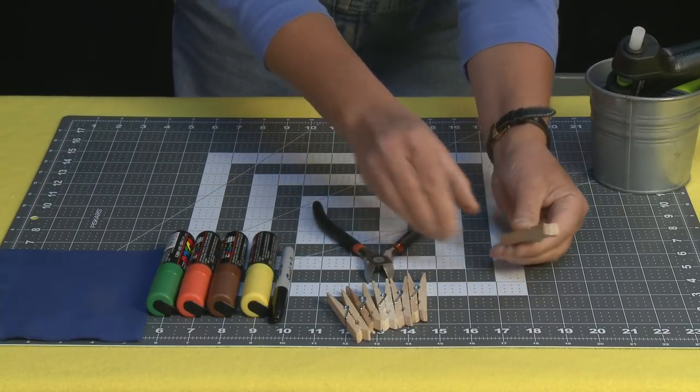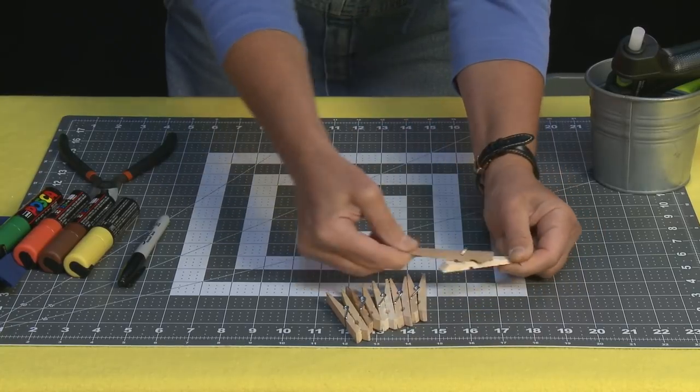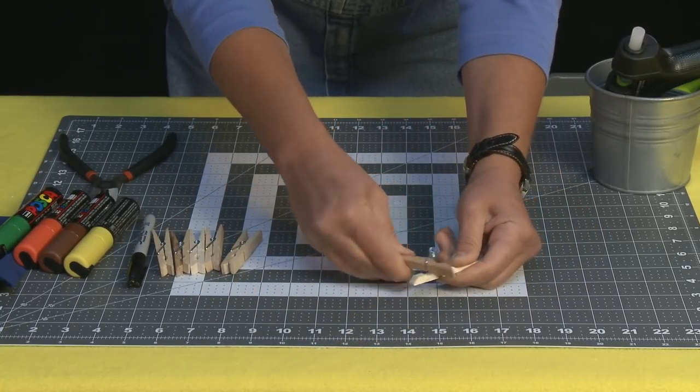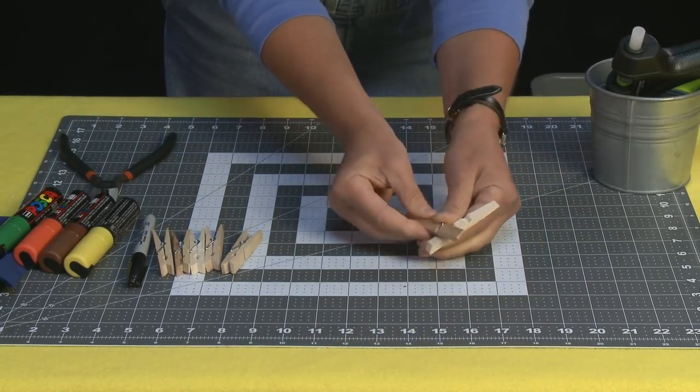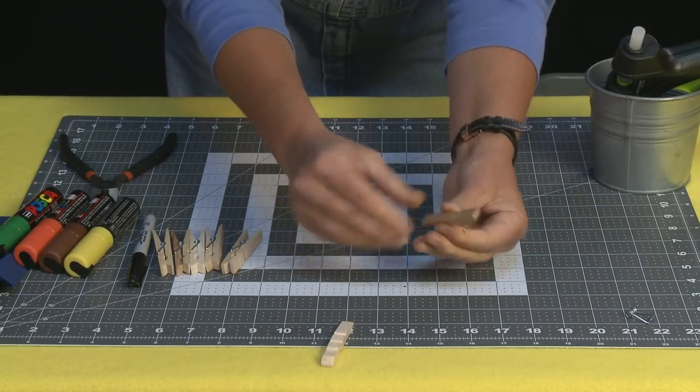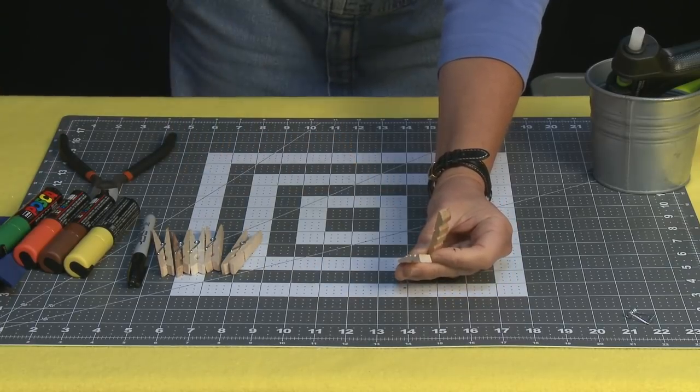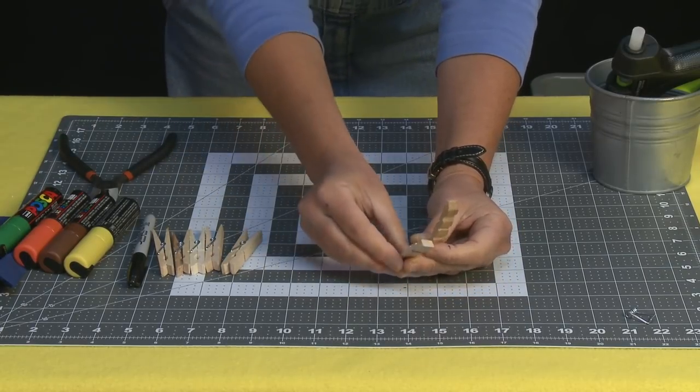And what you're going to do is take these guys and pull them apart. So if you slide them like that to the side they just pop right apart. And you can save these and use those for other fun things but you want to pull apart all of these clothespins and you want 29 total.